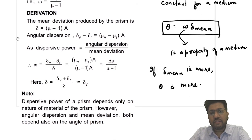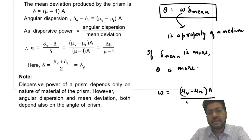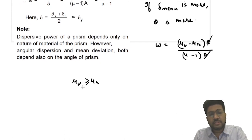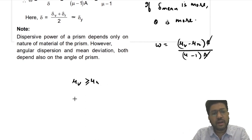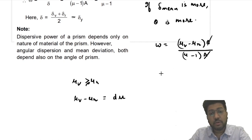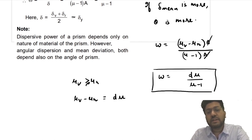Now you have already seen that θ = (μ_v − μ_r)·A for a thin prism, and δ_mean = (μ_mean − 1)·A. The A's cancel. Now μ_v − μ_r is very small, and we represent it with dμ because the infinitesimally small difference can be written as dμ. So ω = dμ/(μ − 1). This is how we define dispersive power.